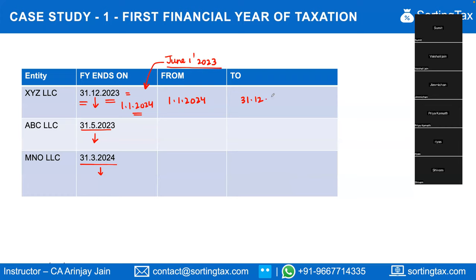For ABC, whose financial year ends May 31: since the law is applicable from June 1, 2023, the first financial year for UAE corporate tax purposes will be June 1, 2023 to May 31, 2024. For MNO, which has a financial year ending March 31: the first financial year starting after June 1, 2023 will be April 1, 2024, so that is the period for which corporate tax will be payable.